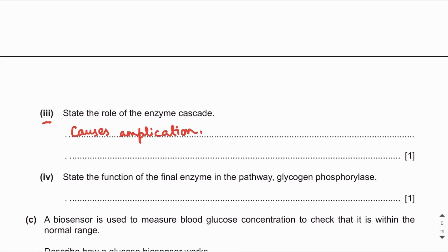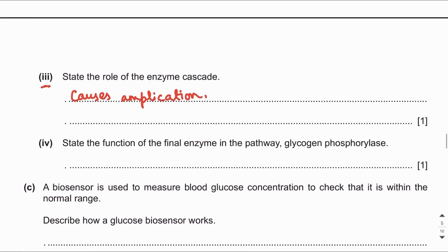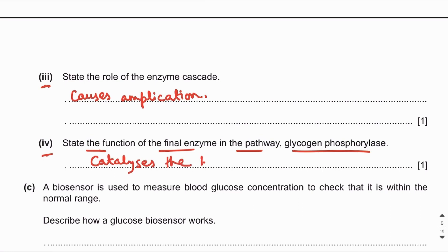State the function of the final enzyme in the pathway — glycogen phosphorylase. It catalyzes the breakdown of glycogen to glucose, which is glycogenolysis.